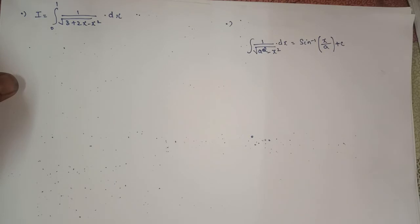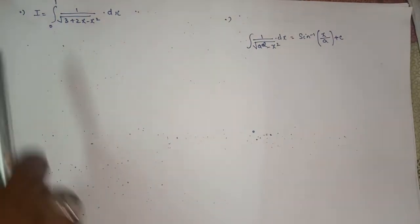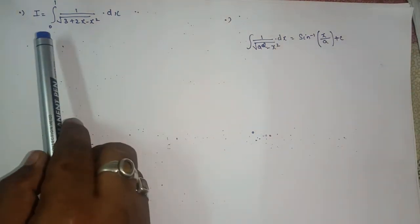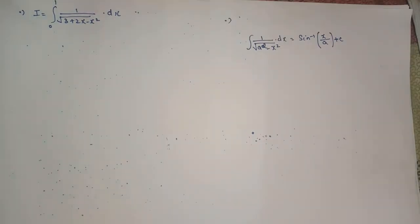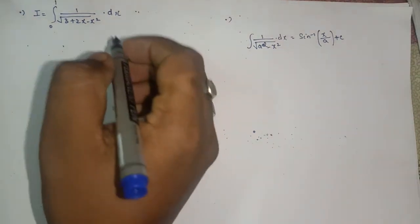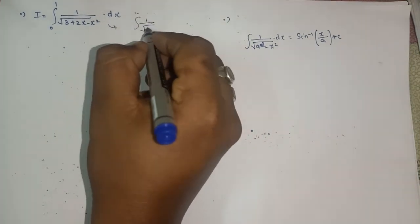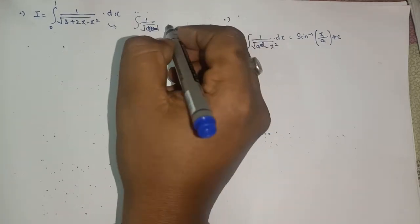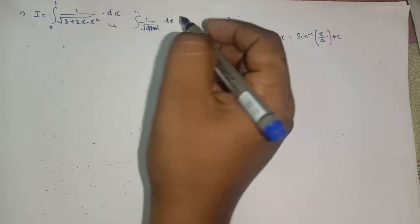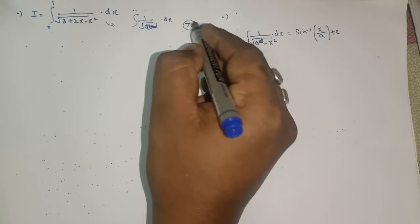For this question, we have the integral from zero to one of 1 upon √(3 + 2x − x²) dx. First, you have to guess the type. Can you see this looks like what? It is 1 upon root of a quadratic, so I guess it is type number two — that is, 1 upon √(quadratic) into dx.